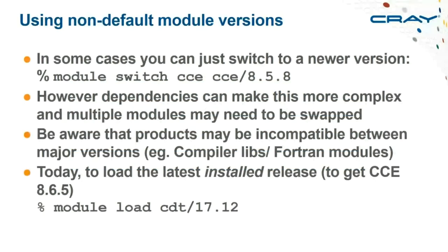To use a component from a non-default installed release, you switch modules. For switching within a major compiler release — say from CCE 8.50 to 8.58 — you can just do 'module switch CCE CCE/8.58'. However, for major version switches you may need to switch compiler, MPI, and LibSci simultaneously to maintain a compatible environment. There can also be Fortran module incompatibilities between major compiler versions.